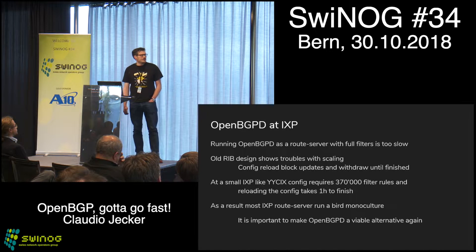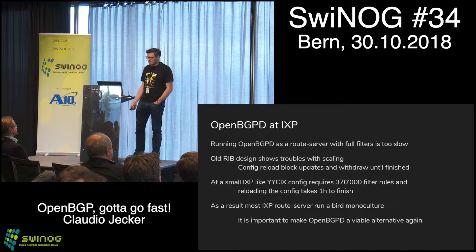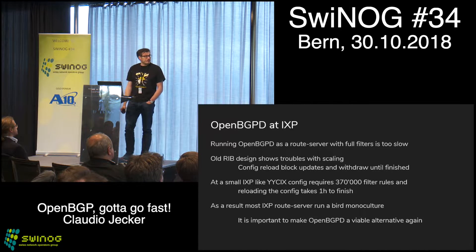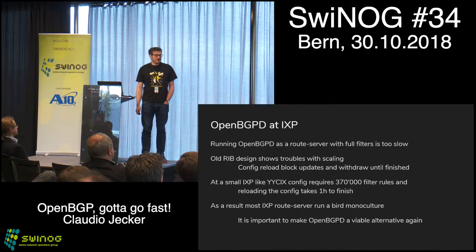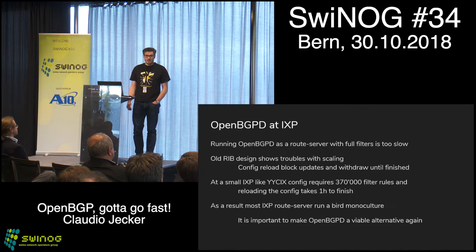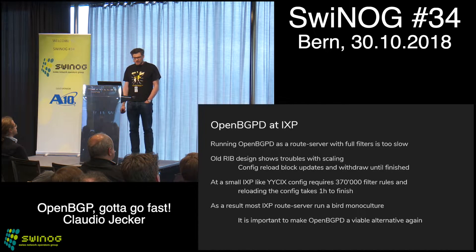Another point — why the filters are so slow — is that if we look at an IXP as an example, the one in Calgary, which has about 50 peers, they require about 370,000 filter rules to do the full filtering. And because of that, it actually takes a long time, especially doing the config reloads. All in all, it doesn't really look good.